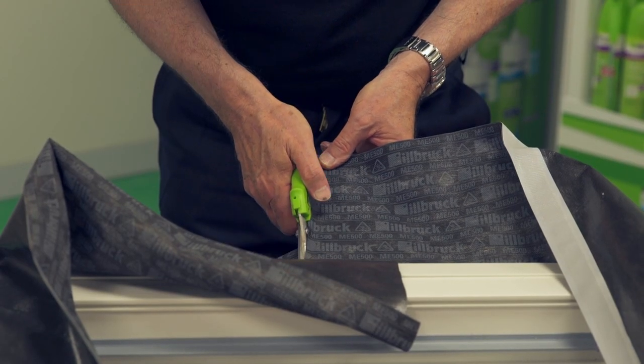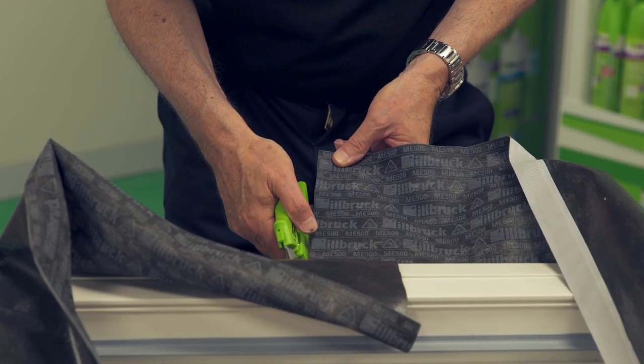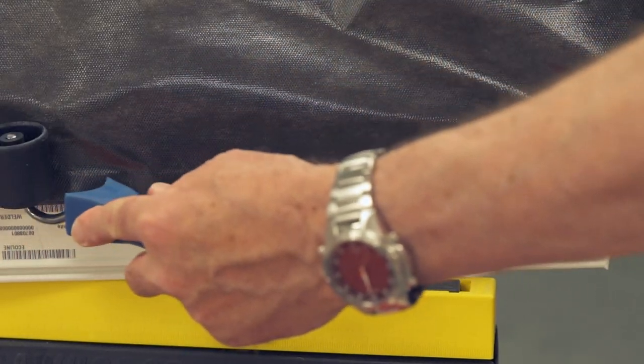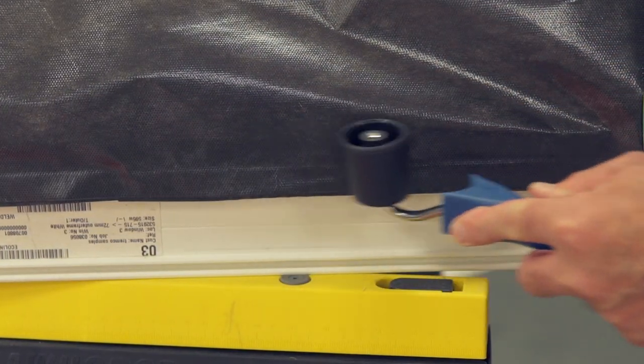Allow a 50mm overlap when the membrane has reached the start point. Pinch the corner folds as previously, then consolidate the bond to the frame by rolling.